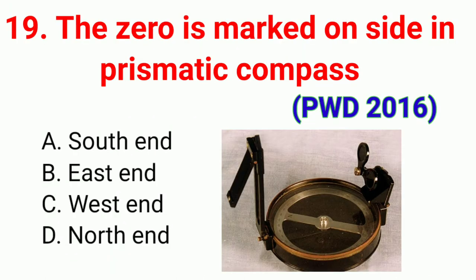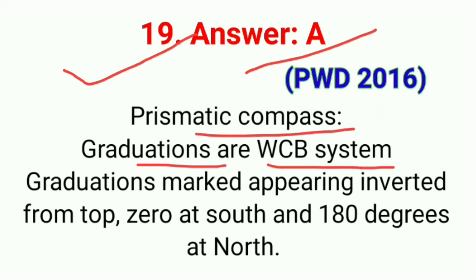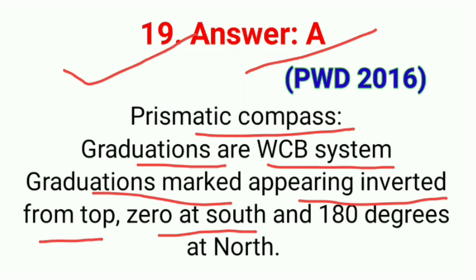Question number nineteen: The zero is marked on which side in a prismatic compass? The correct answer is option A, south end. In a prismatic compass, graduations are in the whole circle bearing (WCB) system, marked appearing inverted from the top, with 0° at south and 180° at north.